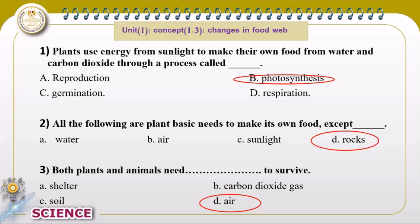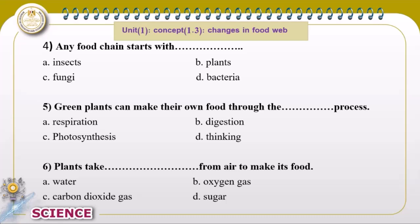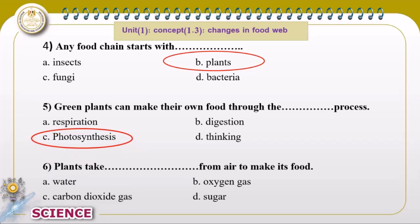Plants need carbon dioxide, but soil is not a basic need and shelter is also not a basic need. So the correct choice is water or air or sunlight. Any food chain starts with a producer — which one is the producer here? That's the plant. The green plant can make its own food by photosynthesis.